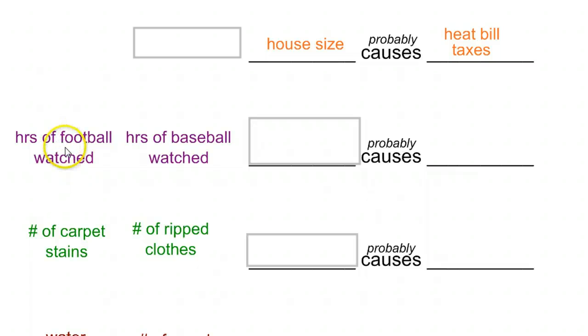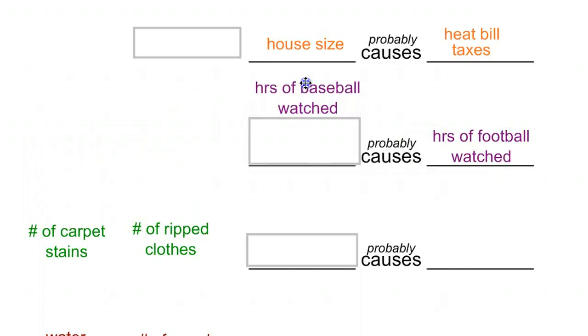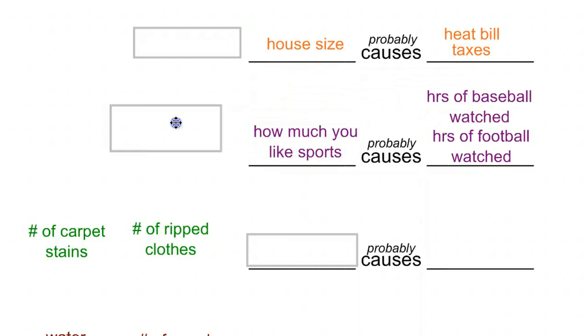Something like hours of football watched and hours of baseball watched, if you take that for different individuals, again, they are correlated. People who watch more football tend to watch more baseball. However, watching football doesn't cause you to watch baseball, and watching baseball doesn't really cause you to watch football, per se. It's probably how much you like sports in general. If you are someone who likes sports a lot, you are going to watch a lot of hours of both.